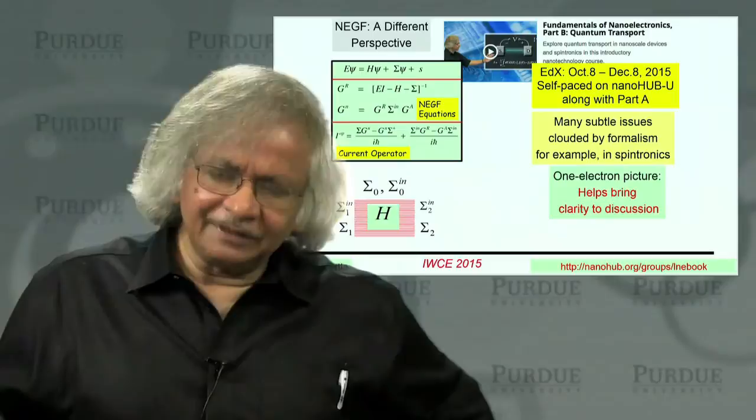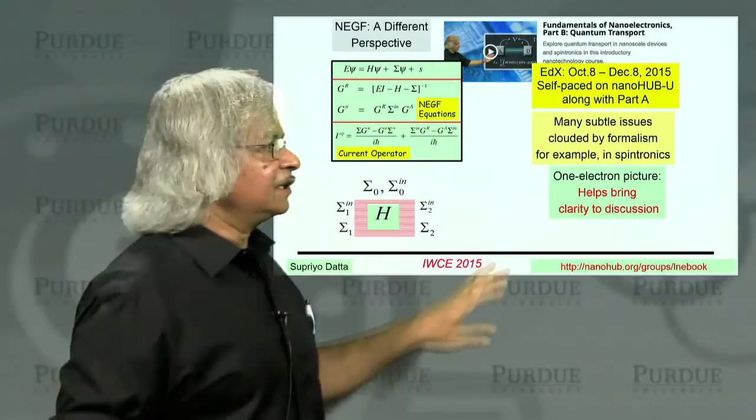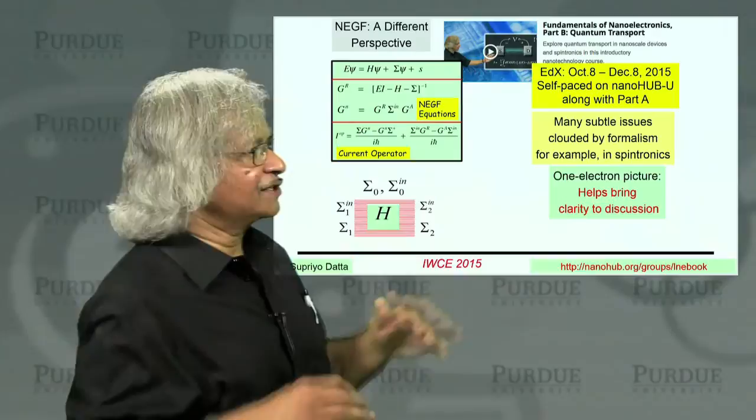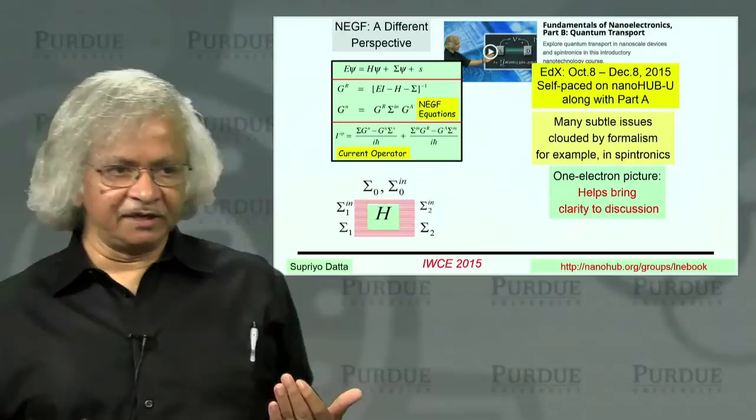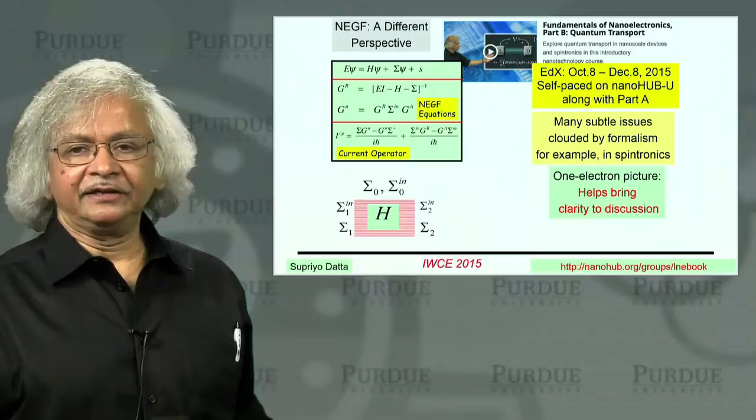And I'd also like to stress that this approach, this one electron approach, is not just for people who lack the background. You see, even if you have all the advanced background, the point is the one electron picture still brings clarity to the discussion. Because when you have this complex formalism, it clouds many subtle issues. So there are many issues in spintronics that are now being debated, like how to deal with equilibrium spin currents and things like that, which again, the one electron picture can bring a lot of clarity to.